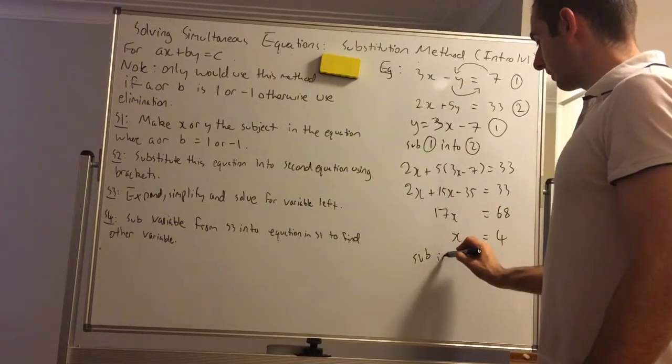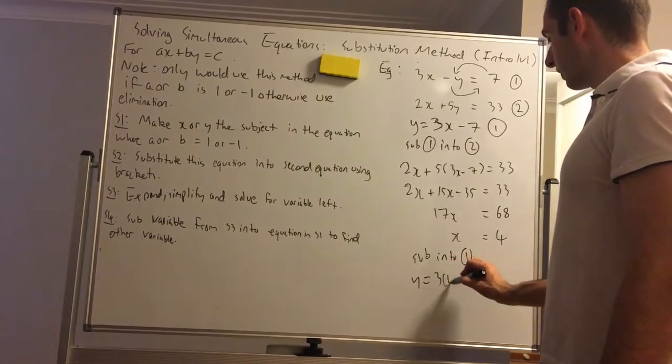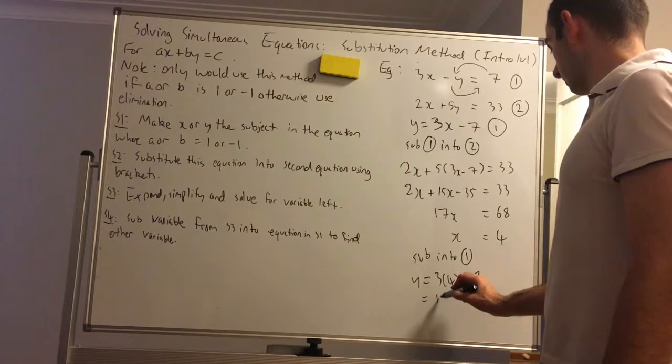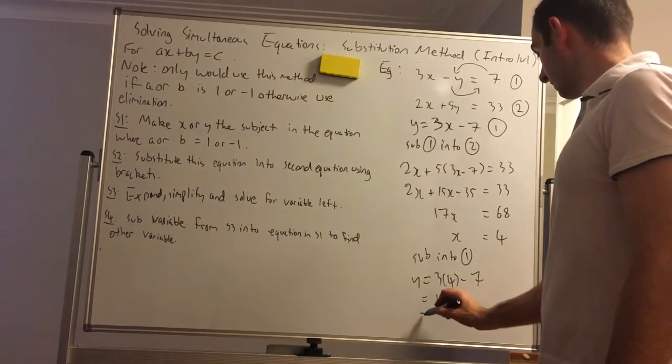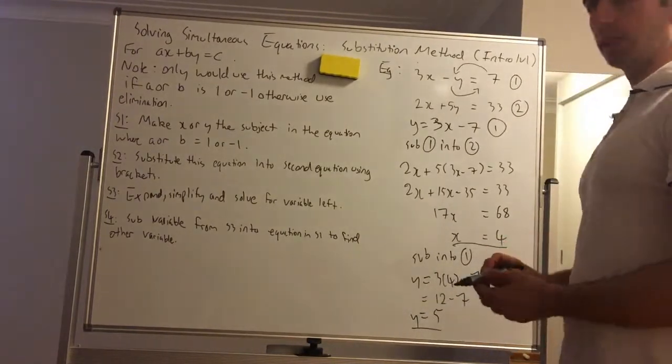So now I can just write sub into 1, and I write y equals 3 times 4 minus 7. 12 minus 7 equals 5, and then my two solutions.